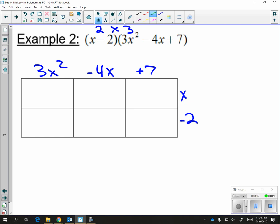We're going to fill it out just like we did before. 3x squared times x is going to give you 3x cubed. That's because this is really an exponent of 1. So the exponent of 2 plus the exponent of 1 gives me my exponent of 3. The next one, negative 4x times x is negative 4x squared. 7 times x is 7x. 3x squared times negative 2 is negative 6x squared. Negative 4x times negative 2 is positive. Be careful. 8x and 7 times 2 is negative 14.